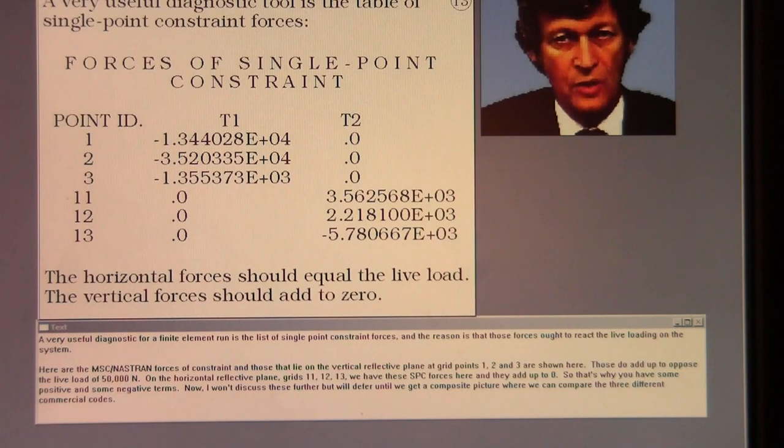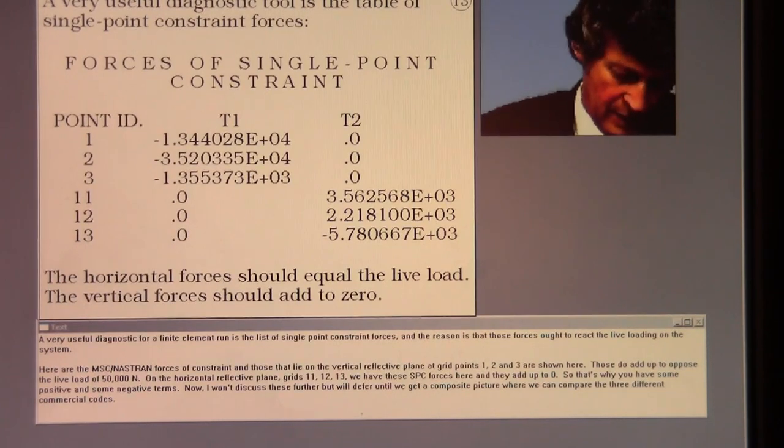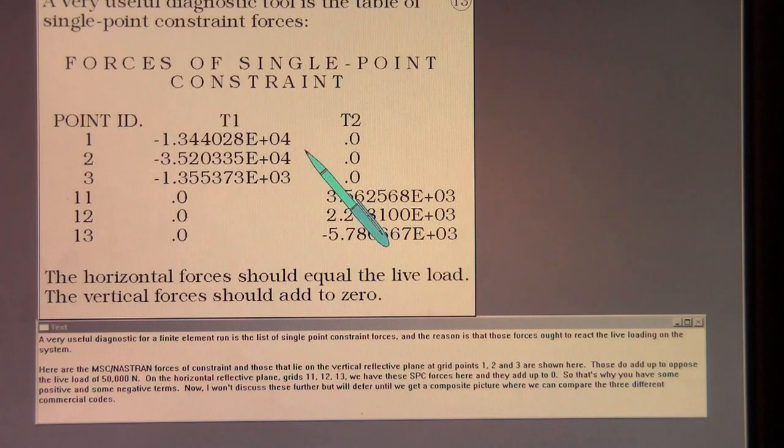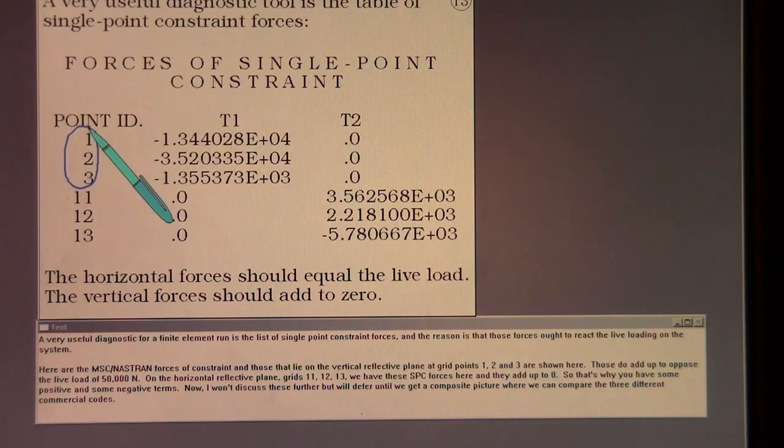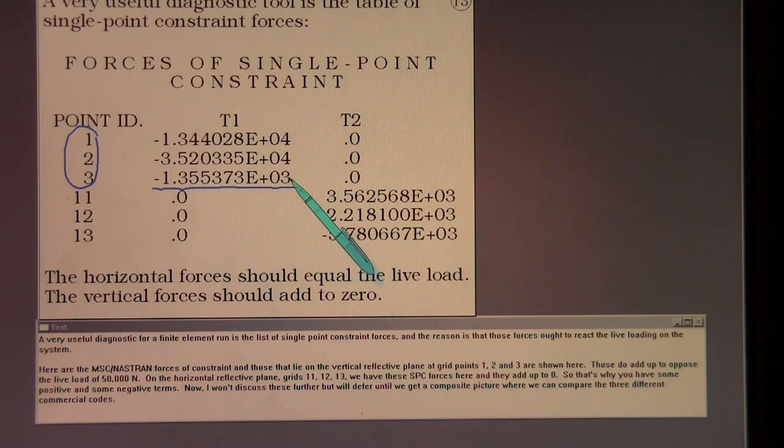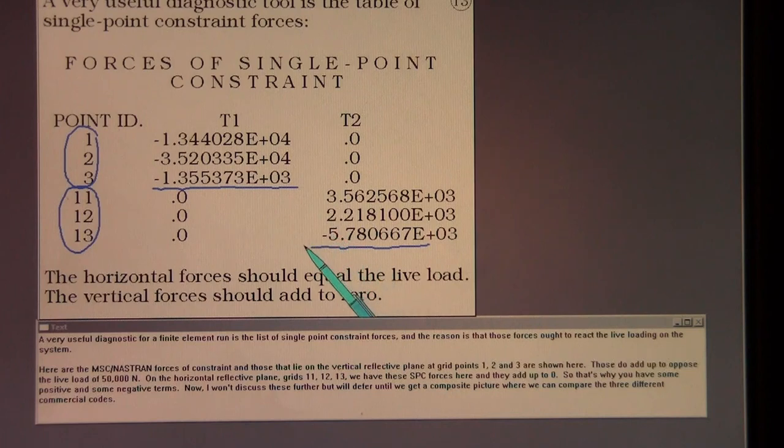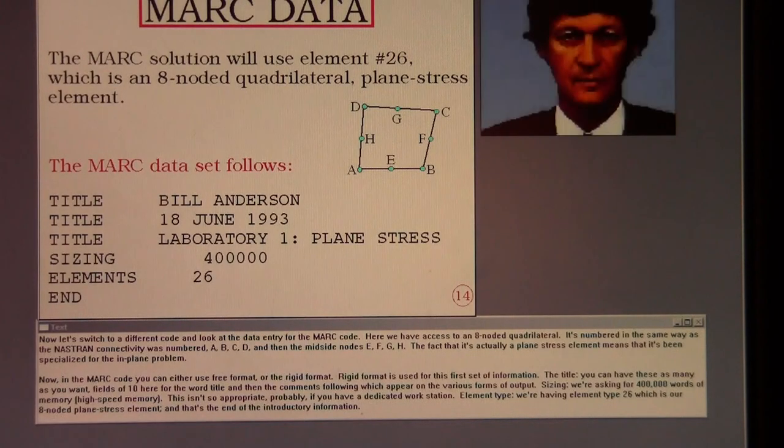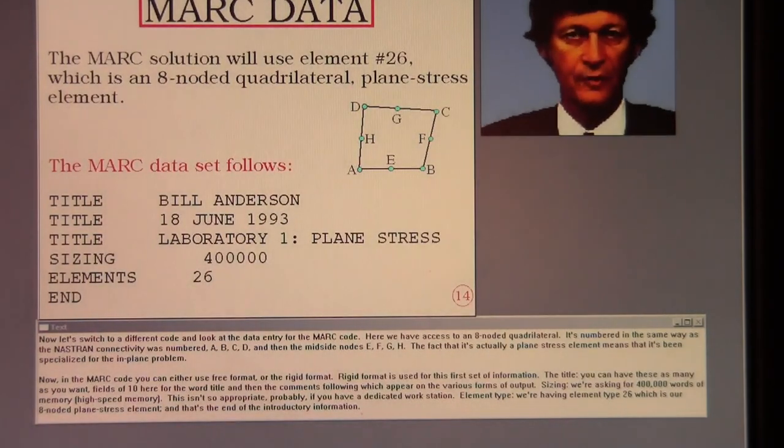A very useful diagnostic for finite element run is the list of single point constraint forces. And the reason is that those forces ought to react to live loading on the system. Here are the MSC Nastran forces of constraint. And those that lie on the vertical reflective plane at grid points one, two, and three are shown here. Those do add up to oppose the live load of 50,000 Newtons. On the horizontal reflective plane, grids 11, 12, and 13, we have these SPC forces here and they add up to zero. So that's why you have some positive and some negative terms. Now I won't discuss these further, but we'll defer until we get a composite picture where we can compare the three different commercial codes.